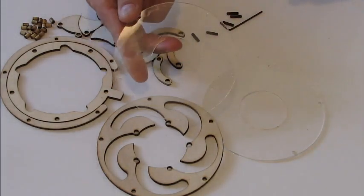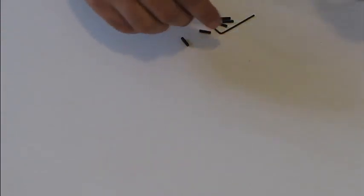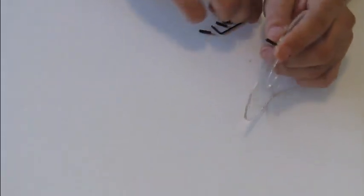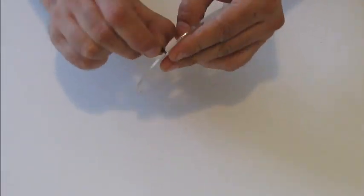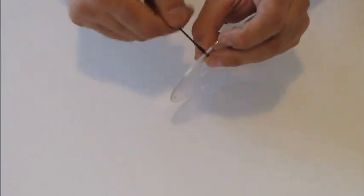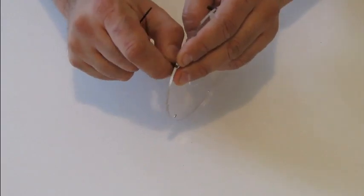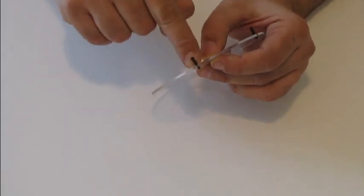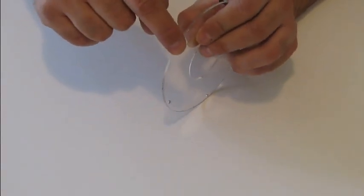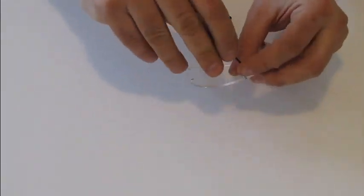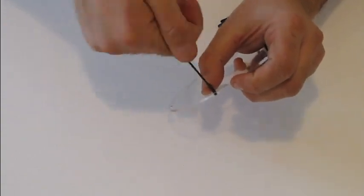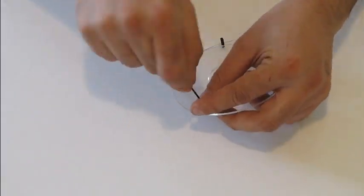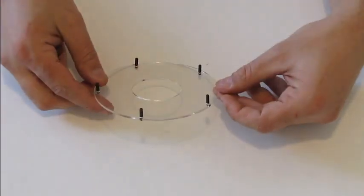First step, take the plexiglass disc and put five bolts in the holes. You may hear a squeaking sound. This is okay. The bolt should go through the hole and get out a little one millimeter out from the other side. Like this.